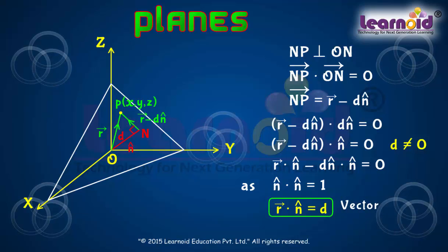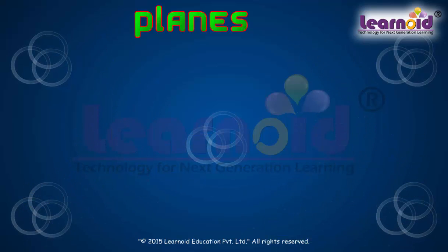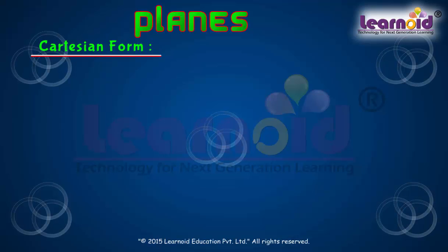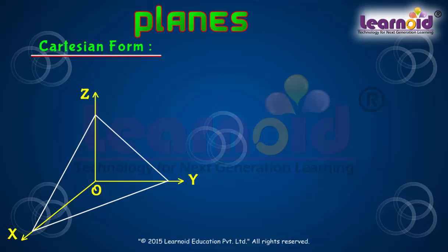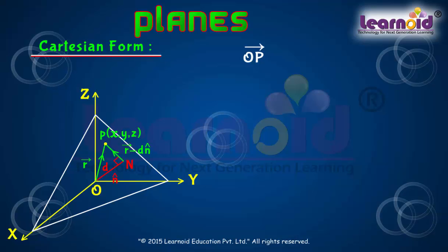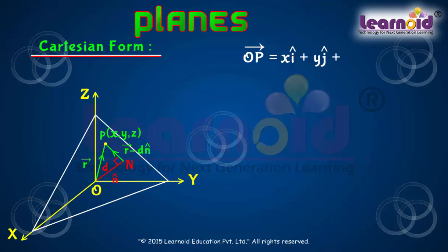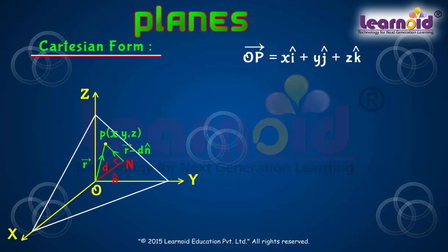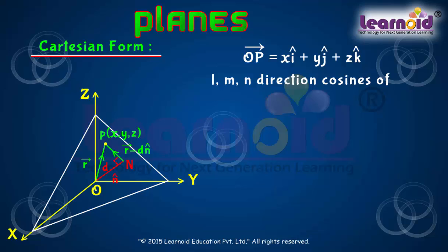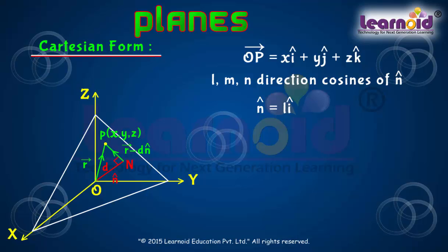This is the vector form of the equation of the plane. Now let us find the Cartesian equation of the plane. Let P(x, y, z) be a point on the plane. Then OP vector is equal to x·i-cap plus y·j-cap plus z·k-cap. Let L, M, N be the direction cosines of the unit normal vector N-cap. Then N-cap is equal to L·i-cap plus M·j-cap plus N·k-cap.